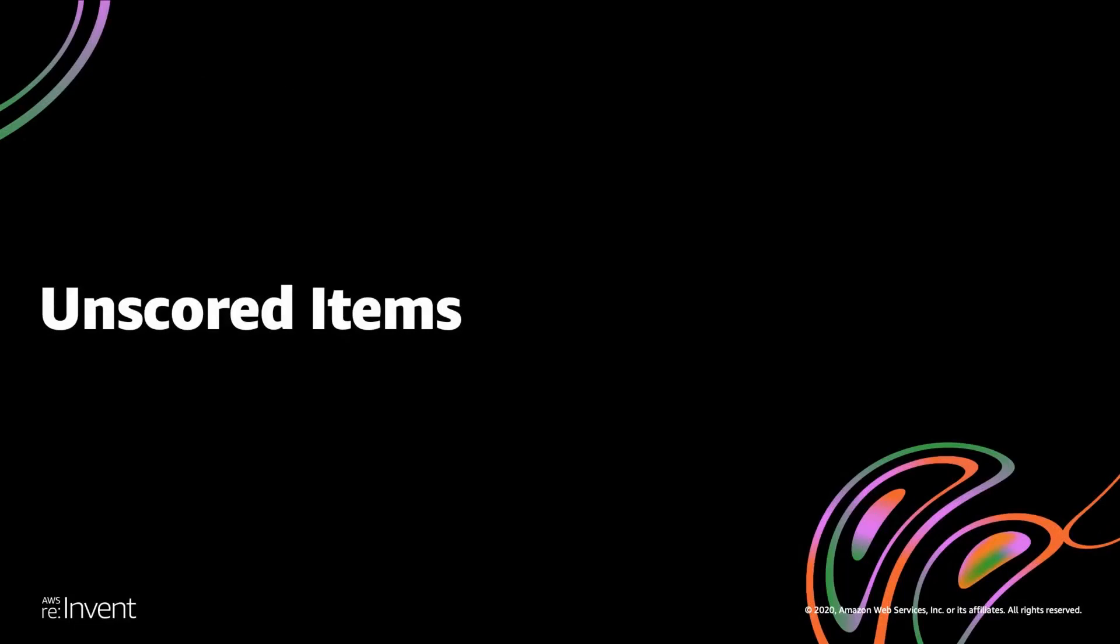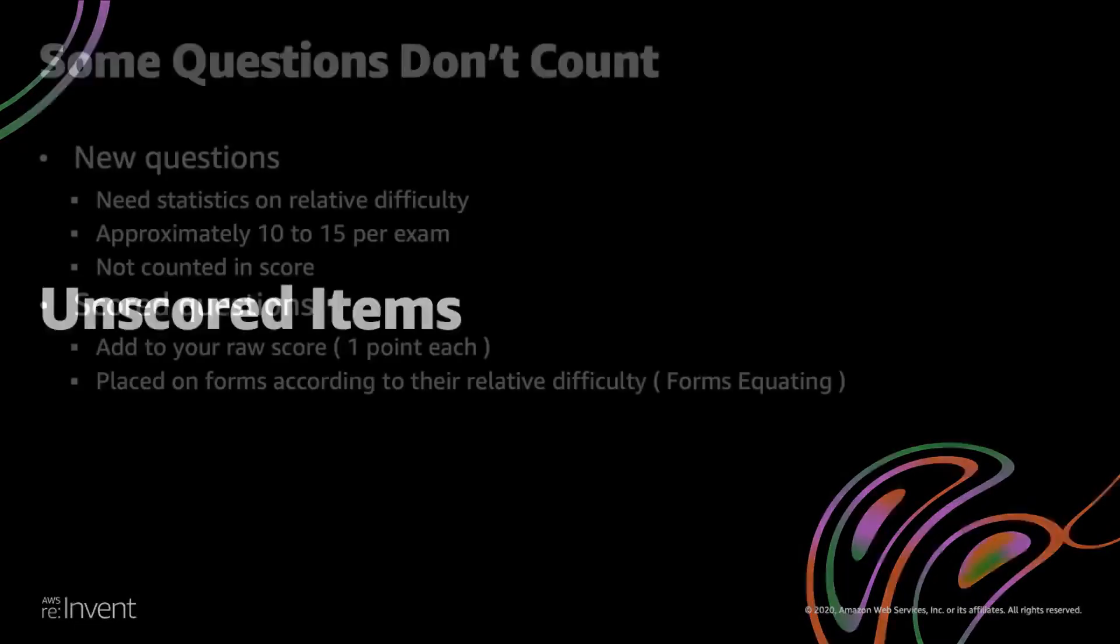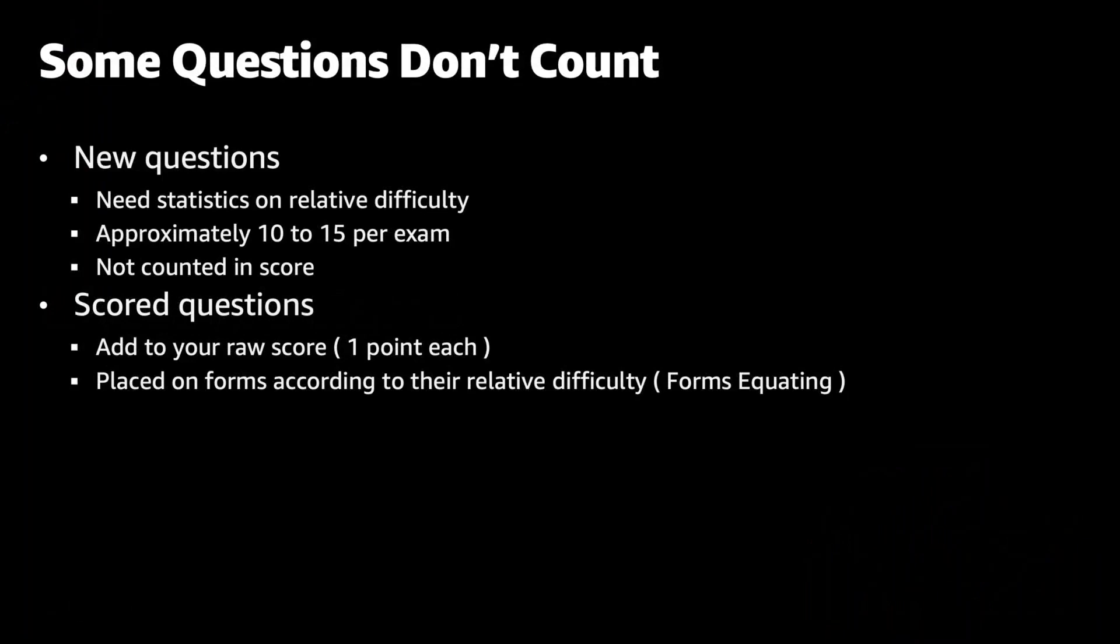So now to let you in on a little secret: unscored items. Each exam contains a number of unscored questions that don't count toward your raw score. The unscored items are newly developed questions that are still being evaluated, and because they are new, we don't have enough statistical data to gauge their difficulty. The way we compute the relative difficulty is by the percentage of candidates that answer correctly, and we're going to need a large sample size to make that determination. Once we have enough data to measure a question's performance, we'll determine if the next steps include promoting the question to scored status for future candidates.